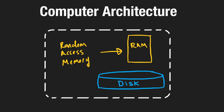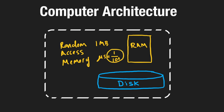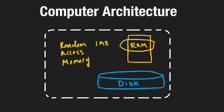The benefit of RAM is that it's much cheaper in terms of performance. Writing a megabyte of data to RAM takes on the order of microseconds — 10 to the power of negative 6, or one one-millionth of a second. Reading and writing from RAM is measured in microseconds, which is a lot faster than reading and writing from disk.